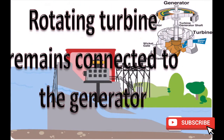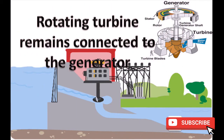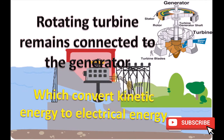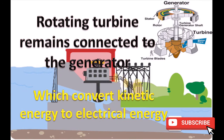The rotating turbine remains connected to the generator, which converts kinetic energy to electrical energy. The generator produces electricity from the moving turbine.